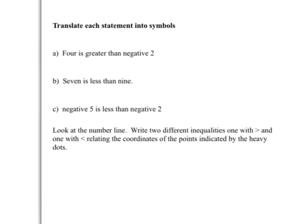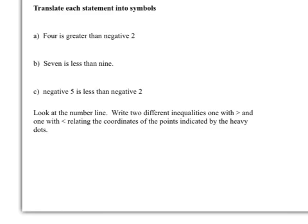Let's translate each sentence into symbols. We've got four is greater than negative two. So four is greater than negative two, or I could say negative two is less than four. Seven is less than nine, or I could say nine is greater than seven.